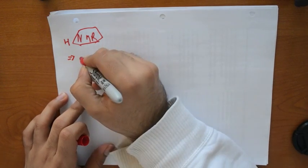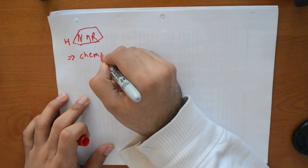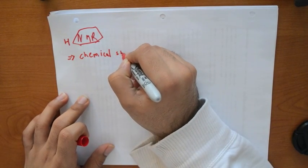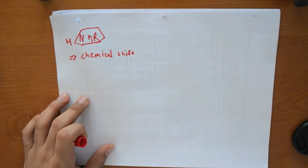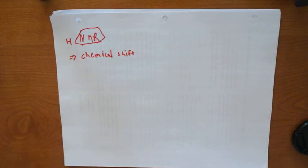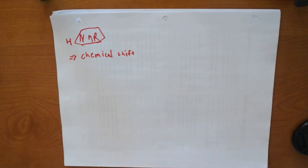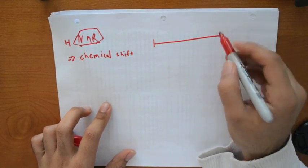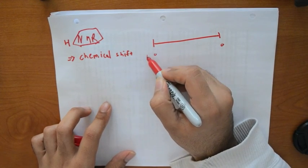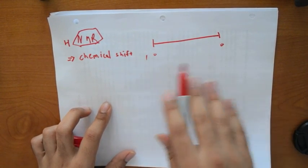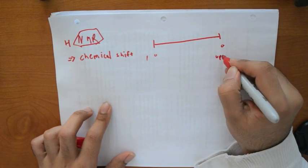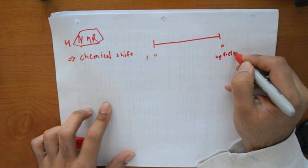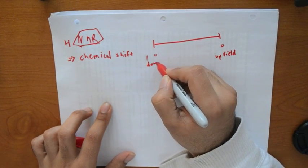Let's continue with H-NMR. The first thing we should understand is chemical shift — the shift of molecules, where they're located on the spectrum. Starting from zero and going up to about ten or further, on the right side is called upfield and on the left side is called downfield.